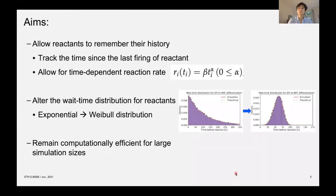The aims of the project is in three parts. We want to allow reactants to remember their history, whereby we track the time since the firing of each reactant, and then we use this time to allow for a time-dependent reaction rate r_i(t_i) = βt_i^α (0 ≤ α). And using this rate formula, we can then alter the waiting time distributions of the reactants, and specifically, we recover a Weibull distribution.